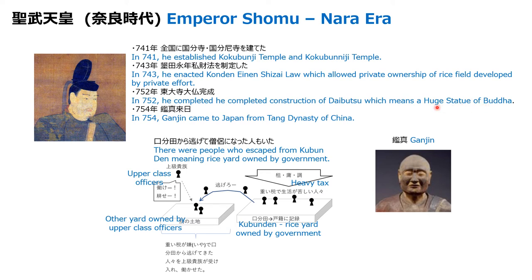This is the Todaiji temple, which contains a huge statue of Buddha — a symbol of Buddhism. Emperor Shomu thought Buddhism was very important, so he built this huge statue of Buddha. Also, Ganjin came to Japan from China to apply the strict rules of Buddhism in Japan.